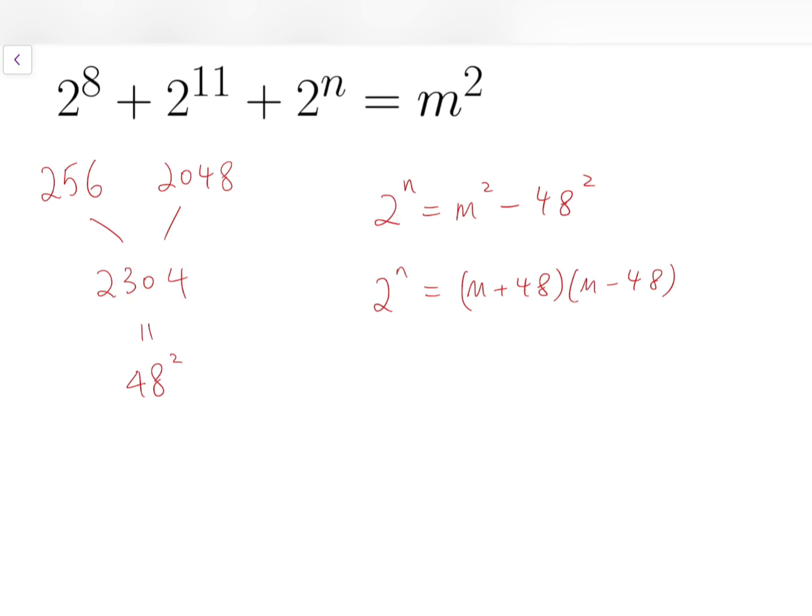And so we can let m + 48 to be, say, 2^a, while m - 48 is equal to 2^b, where a, b should be integers, that is non-negative.